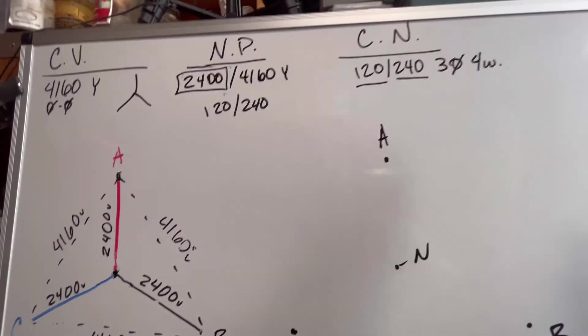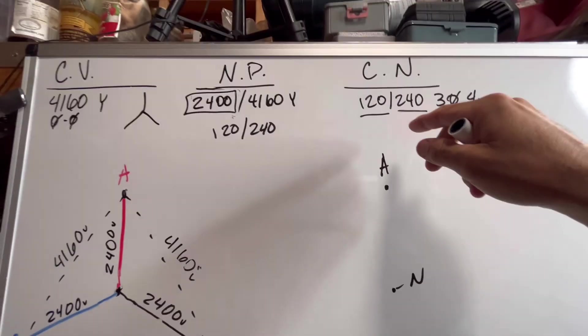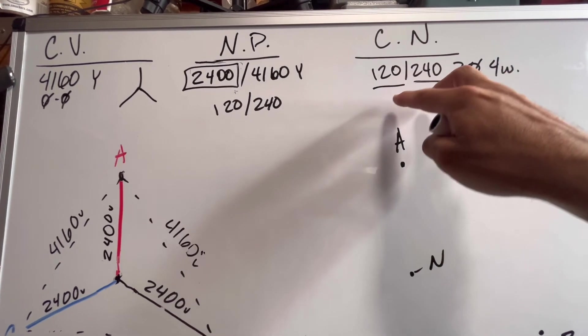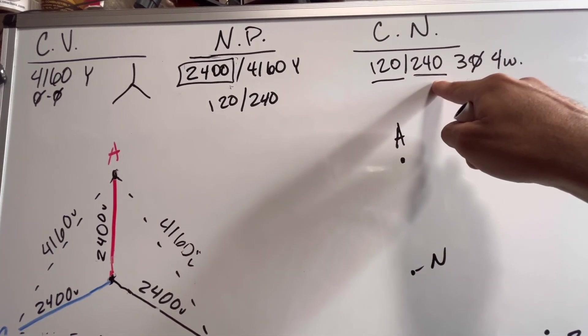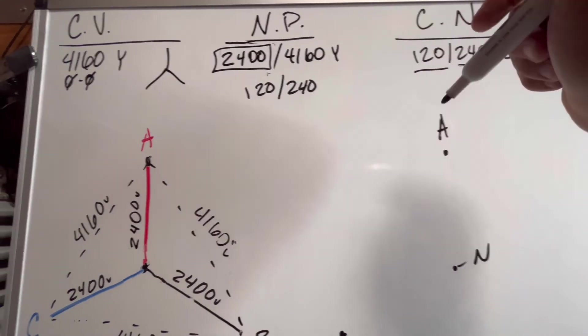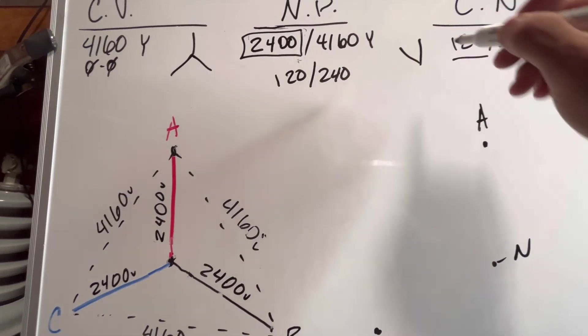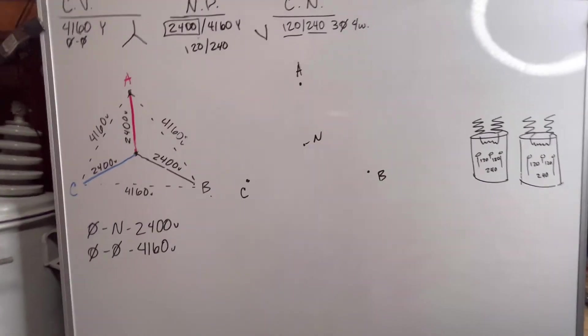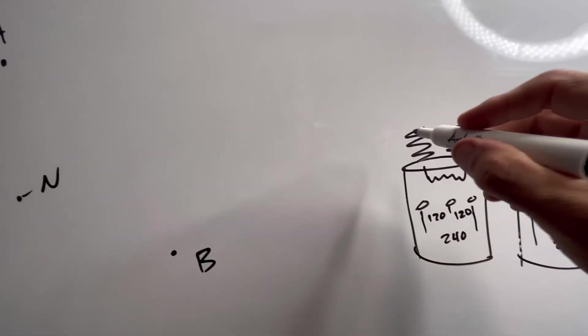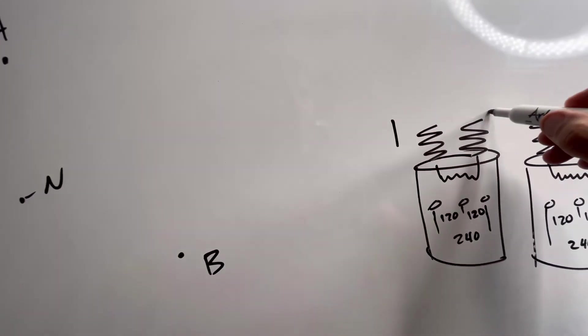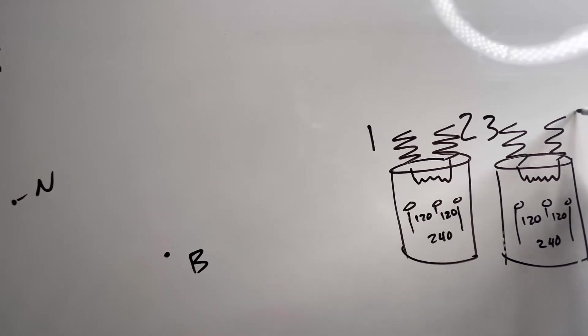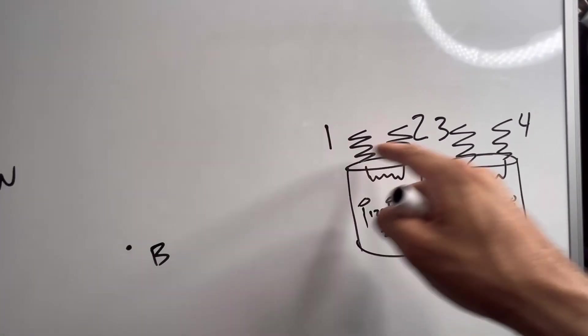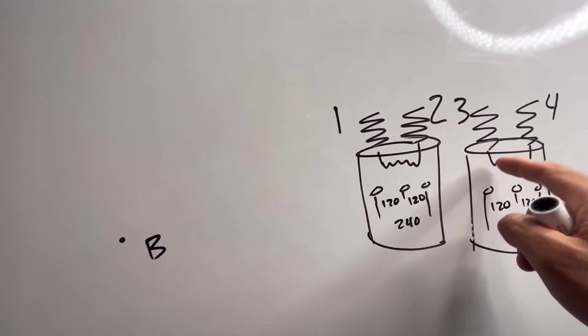So the way that we determine that is by the old rule delta divide. Delta divides, 240 is divided evenly by 120, therefore it is a delta. So the next step is to come over here to our transformers and we're going to label them straight across one, two, three, four on my primary side and my secondary side.